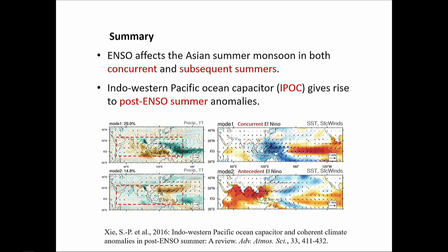To summarize: ENSO affects the Asian summer monsoon in both concurrent and subsequent summers. The concurrent summer effect is kind of obvious — Walker noticed it more than 100 years ago. But there is increasing evidence that ENSO has an effect on the subsequent summer as well. The Indo-Western Pacific Ocean Capacitor, viewed as a coupled mode, seems to give rise to coherent recurrent post-ENSO summer anomalies as illustrated by the two EOFs: EOF1 the concurrent ENSO effect, EOF2 the post-ENSO effect. All this seems to now fit together to a degree.